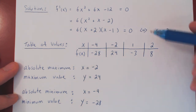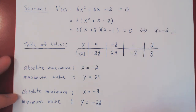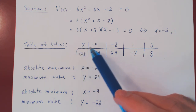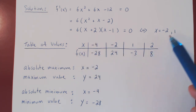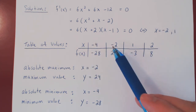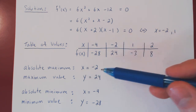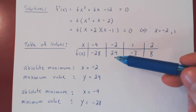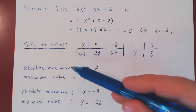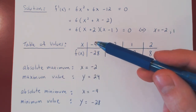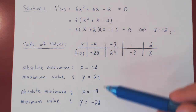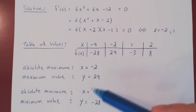And we're done. What was so great about this method is we did not have to sketch the graph of our function over the interval. All we have to do is evaluate the function at the two endpoints of the interval and at every critical point inside the interval. Whichever value of x yields the larger y value will be our absolute maximum, and whichever yields the smaller y value will give us our absolute minimum.